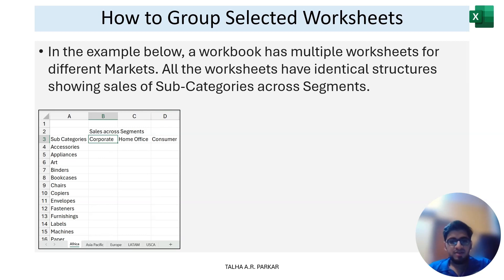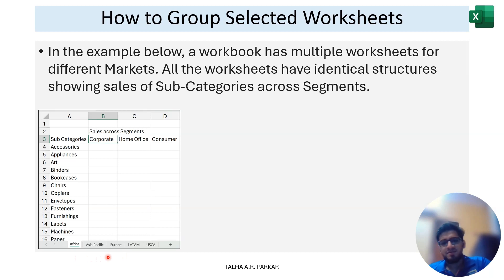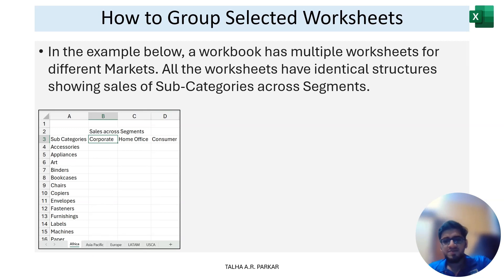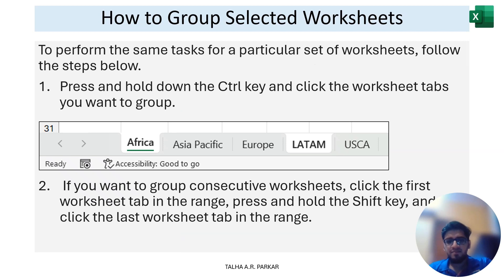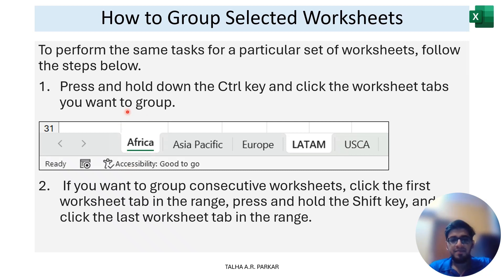To group worksheets, in this screenshot we have different sheets for different markets — this is some sales data. To group any two worksheets, all you have to do is select two worksheets by holding down Ctrl. Once you're on an active worksheet, press Ctrl and select any other worksheet. In this case, I grouped Africa and LATAM.